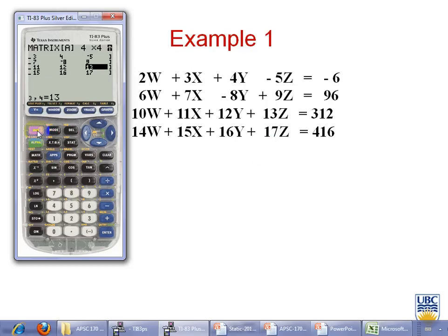Let's go back and form matrix B. I edit. Matrix B is obviously 4 rows and 1 column, 4 by 1, and these are my constant values here: minus 6, 96, 312, and 416. There we go.